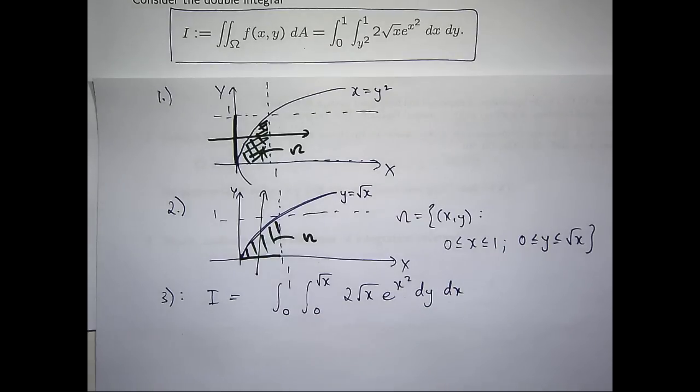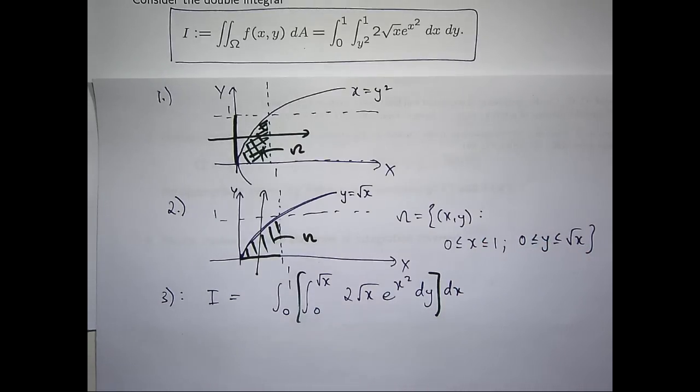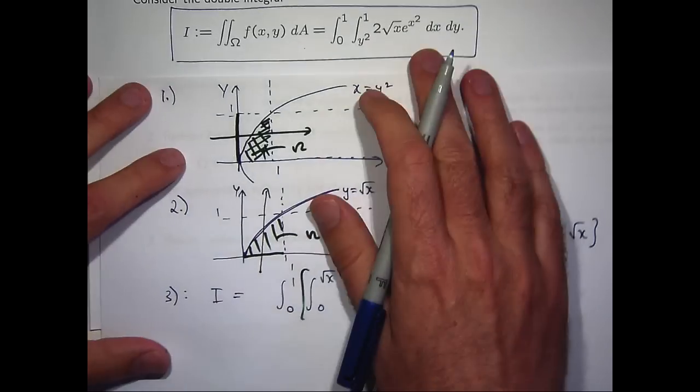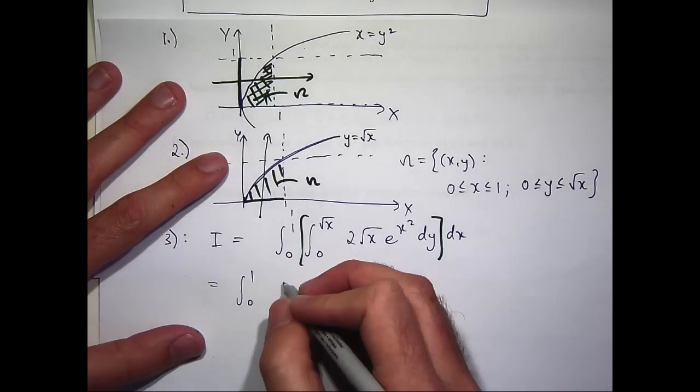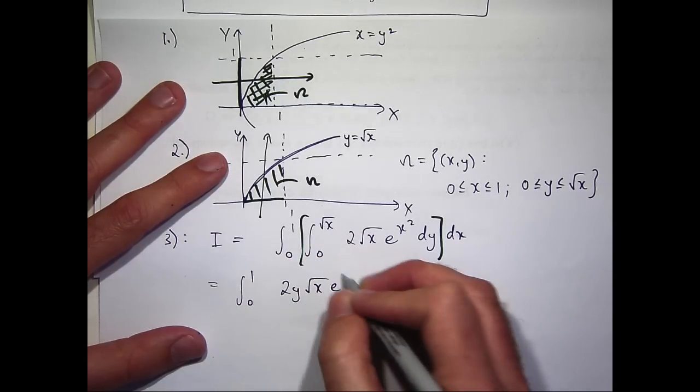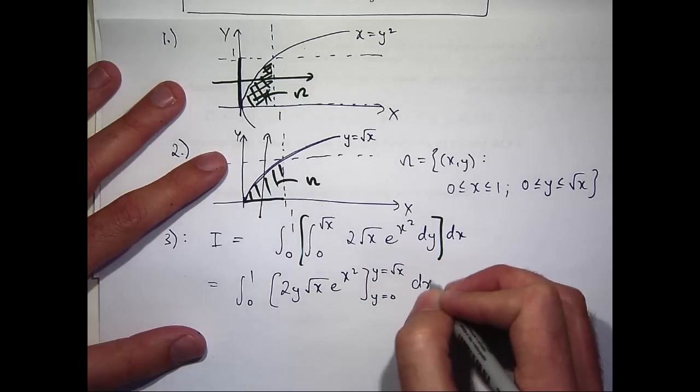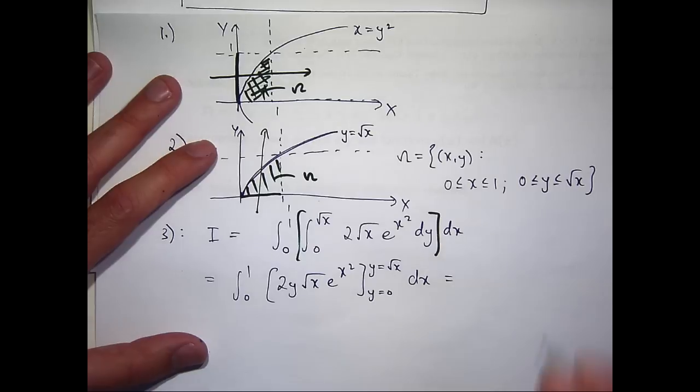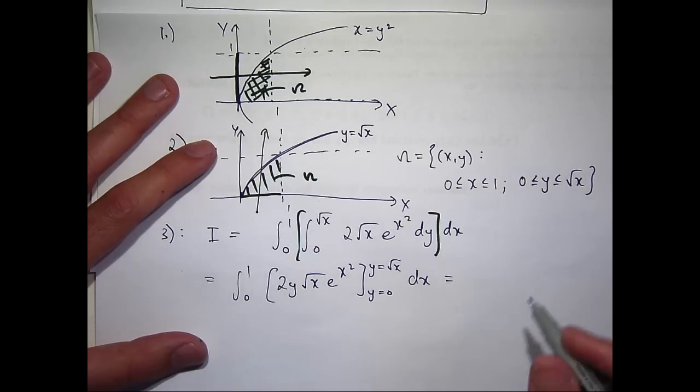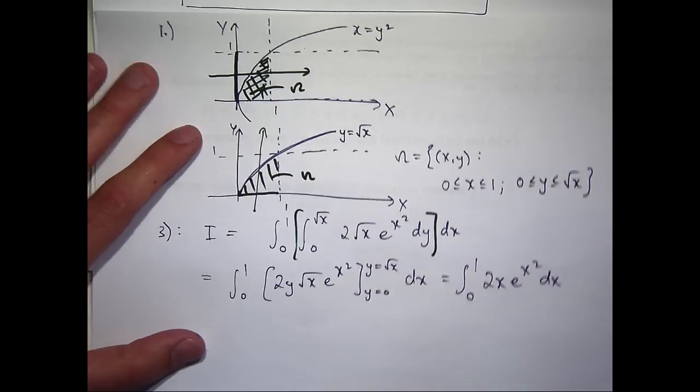So just like any double integral, you work on the inside one first. So we want to integrate that inside integral with respect to y. So I'm going to get 2y root x e to the x squared. And when I plug in for y, the second term's going to be 0, and the first term, I'm going to get root x times root x. So I'll get something like this.